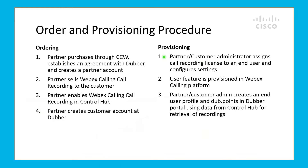When it comes to provisioning, it can either be done by the partner or the end customer administrator. Either the customer admin or the partner assigns the call recording license to an end user and configures the settings of this feature, such as always-on recording or the pause/resume option. Then the partner or the customer admin creates an end user profile and Dubb points in the Dubber portal using data from Control Hub for this end user, so that the call recordings can be linked and retrieved.